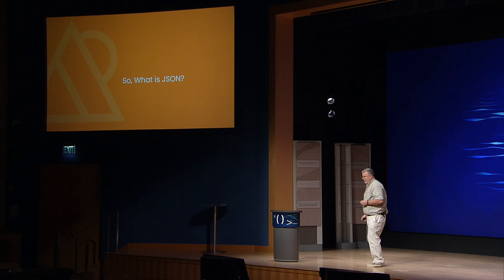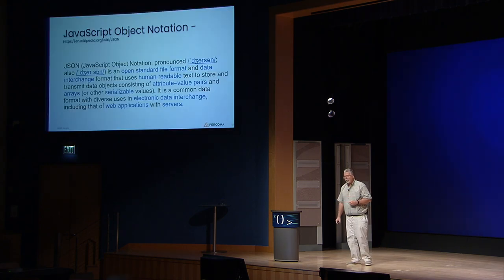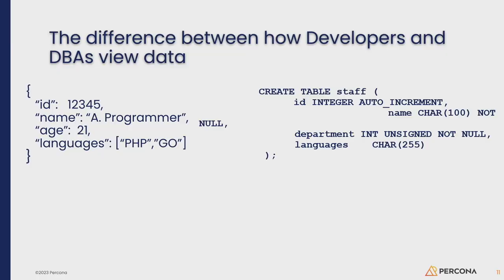So what is JSON? It's the data interchange format of choice for most developers out there. It started off as JavaScript Object Notation. Very human readable, very easy to write, and it's the standard for interchange. Developers tend to see the world like things on the left, where you have key-value pairs, where you have a key of ID and a value.